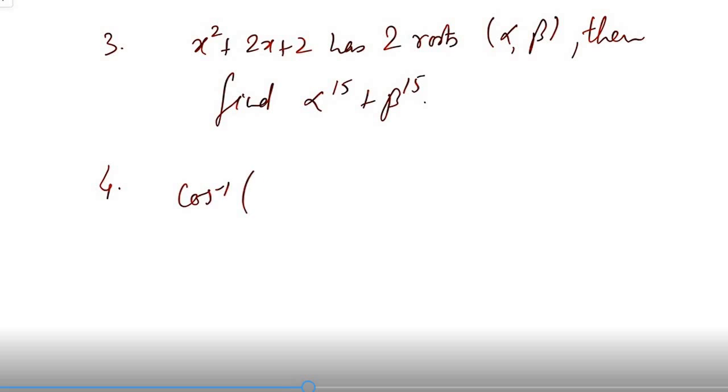Fourth is: cos inverse 2 upon 3x plus cos inverse 3 upon 2x is equal to pi upon 2, then find x.